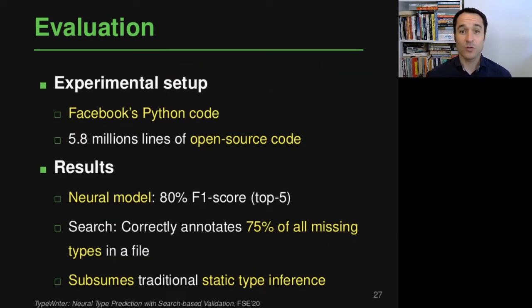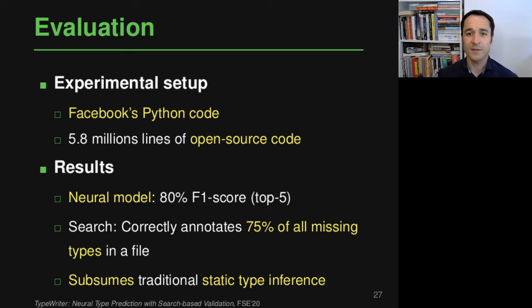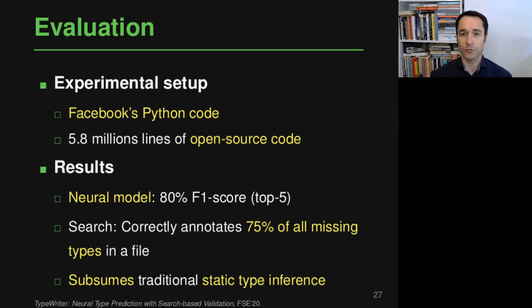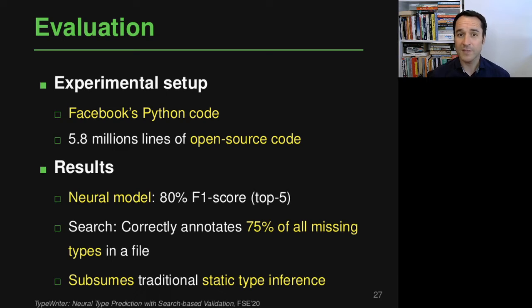We applied TypeWriter to all Python code at Facebook at a point in time, and also ran it on almost six million lines of open source code. The neural model predicts types with an 80% F1 score within its top-five predictions. With our automated search, TypeWriter correctly annotates 75% of all missing types in a given file. We also compare TypeWriter to traditional static type inference and show that in practice it basically subsumes what static type inference is able to do.